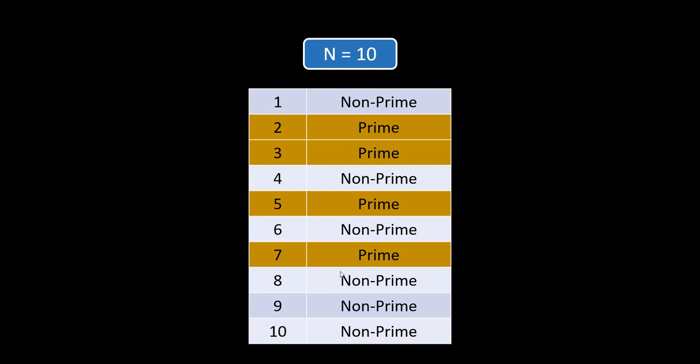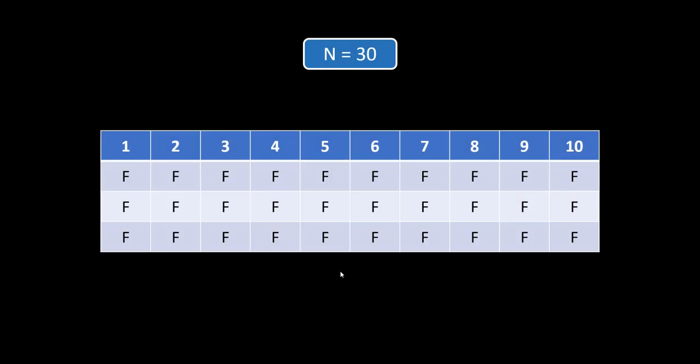In this video we will see one of the famous algorithms used to count the number of primes, which is called the Sieve of Eratosthenes. Now let's see how this algorithm works. Suppose we have got the number as 30. Here I have taken an array of 30 — it's a one-dimensional array but due to lack of space I have divided it into 3 rows.